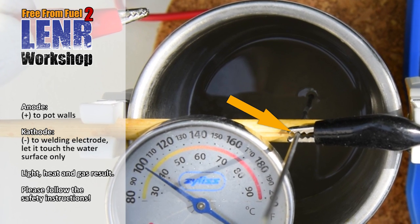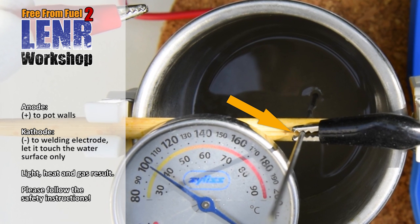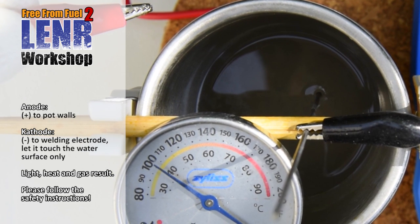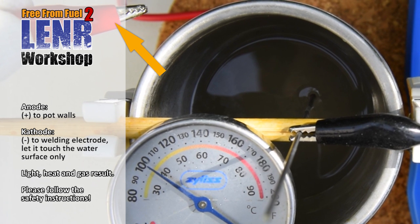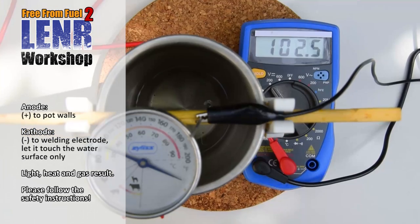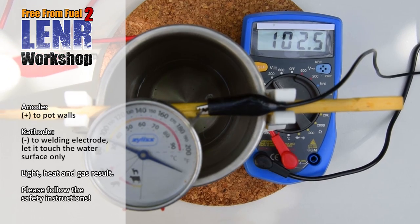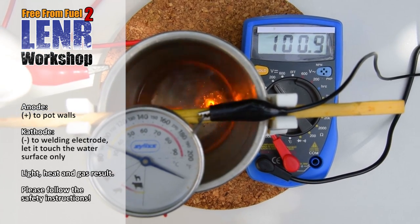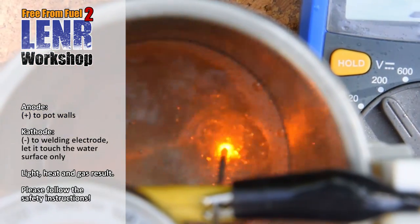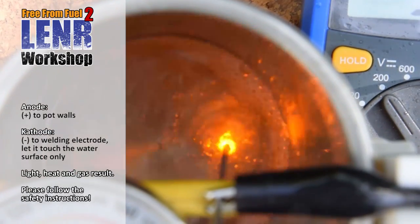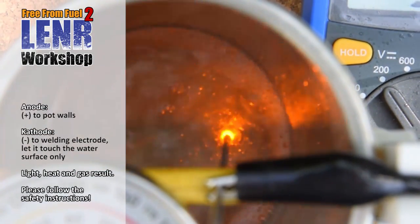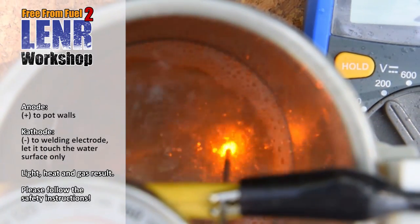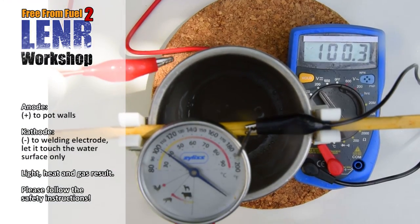Then the black cable, negative, goes to the electrode. And the red cable, positive, goes to the mug. And then be careful, the lye will splatter. Watch the temperature.